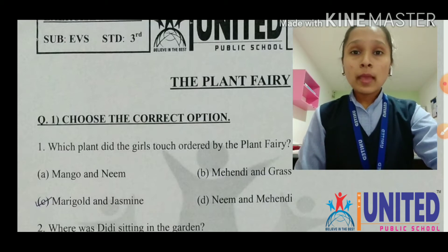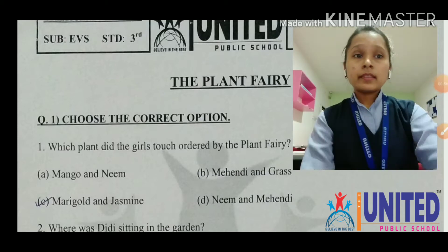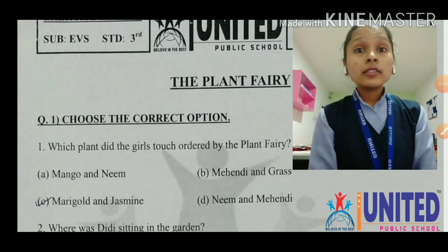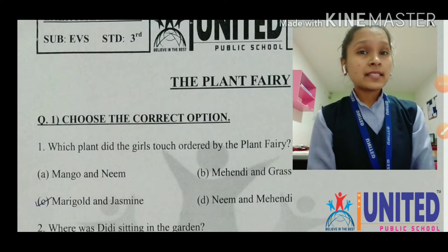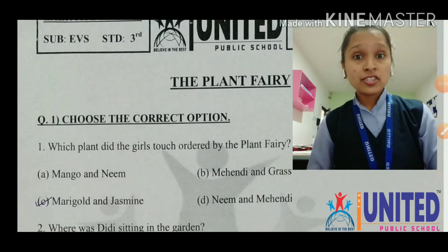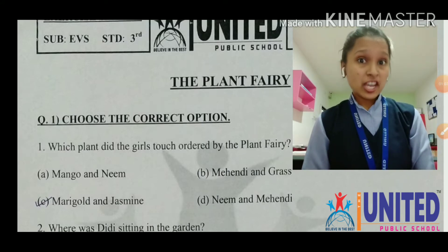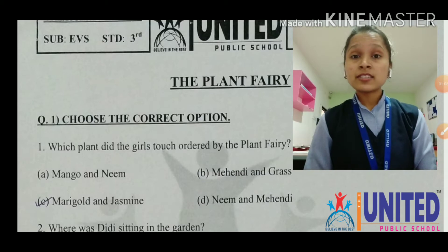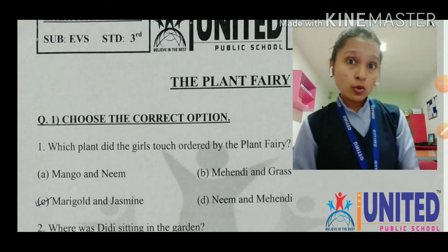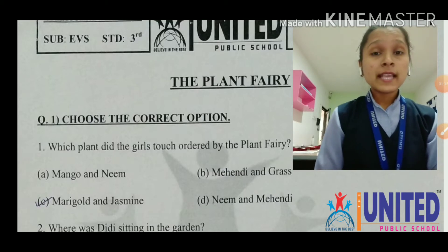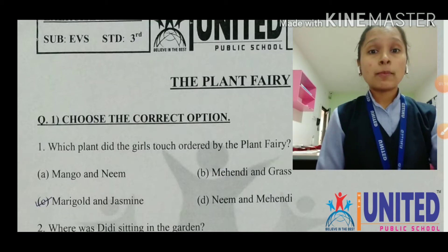Do you remember what the girls touched? Amu has touched the marigold plant. Then Shabnam has touched the jasmine plant. Michael has touched the mehendi bush and Dayaram has touched the neem tree. So girls touched option C, marigold and jasmine.